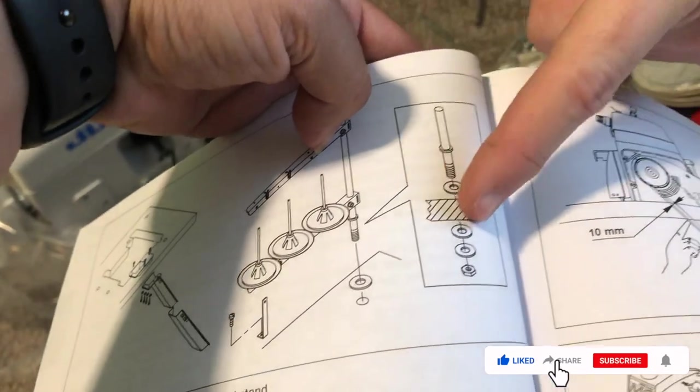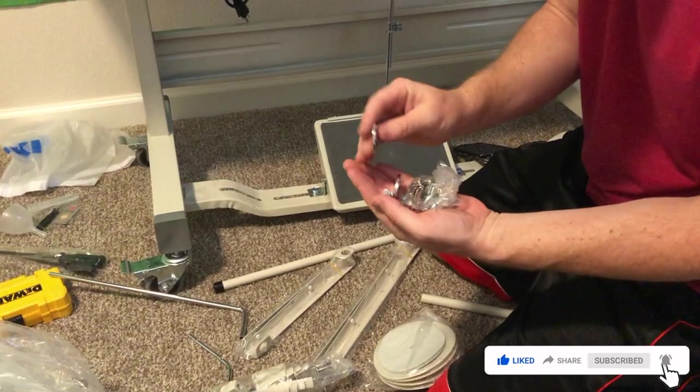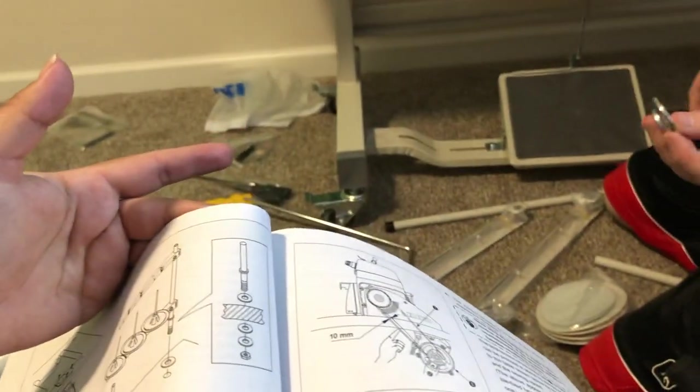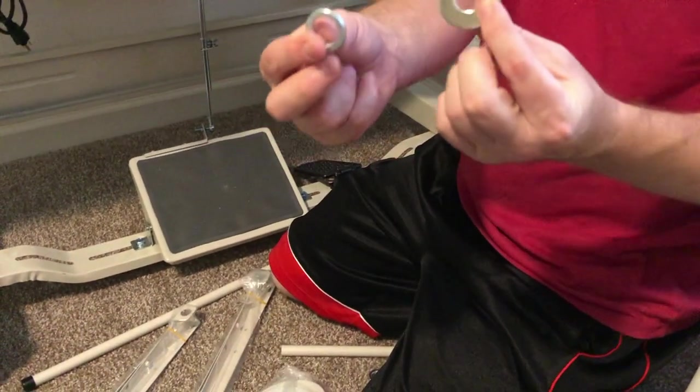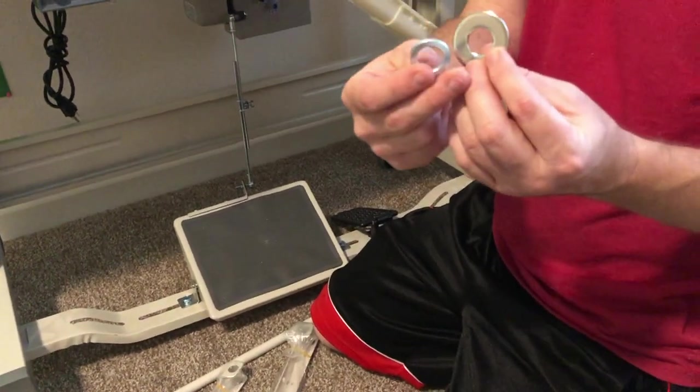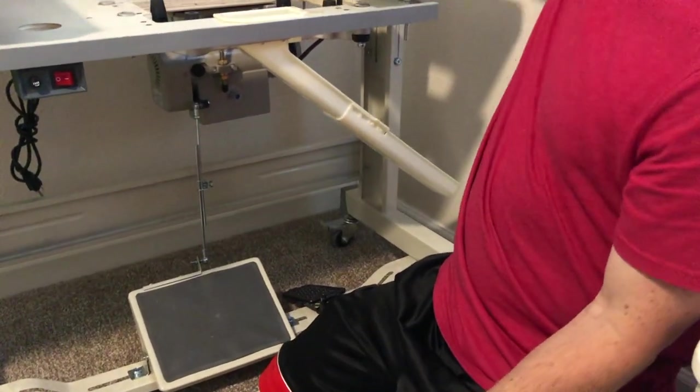Okay. So one washer. You want to have one washer on top of the table, two underneath with the nut. Yeah, just two. I'm assuming one's a lock washer. It's always good to have a lock washer in there. And we're going to go ahead and put it in place.